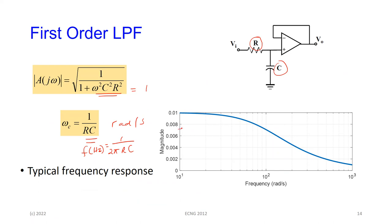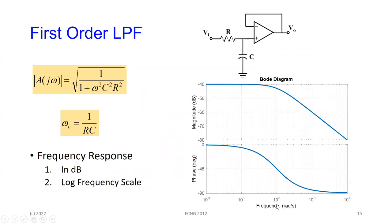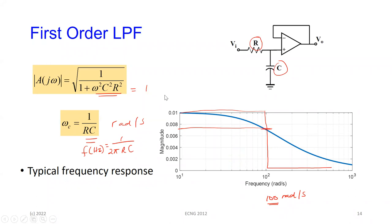If you look at the plot, the ideal response is a sharp cutoff, but the actual first-order response is quite far from that ideal. You can see the behavior it's doing what we want — cutting off everybody above 100 radians per second starts to attenuate — but there's always that gap between the actual and ideal response.